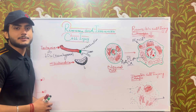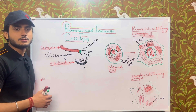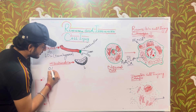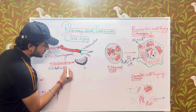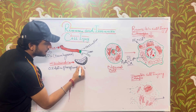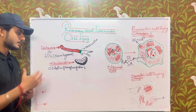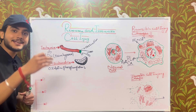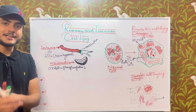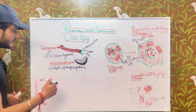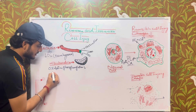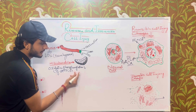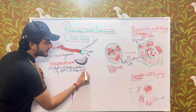Oxygen is the final electron acceptor in the electron transport chain, which is involved in the process of oxidative phosphorylation. Due to the lack of oxygen supply, oxidative phosphorylation decreases, which means that the formation of ATP is also decreased. If ATP formation is reduced by 5 percent from normal, the cell starts swelling up.